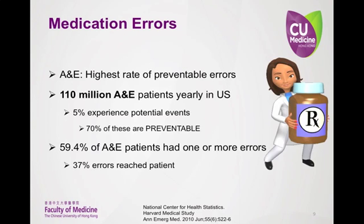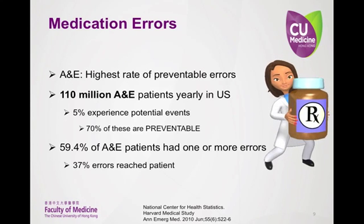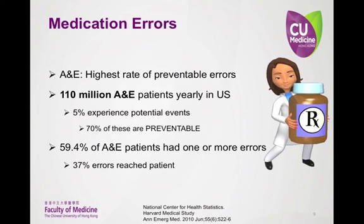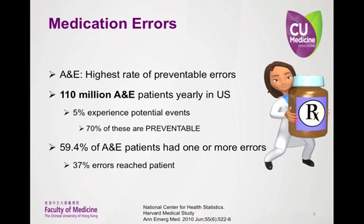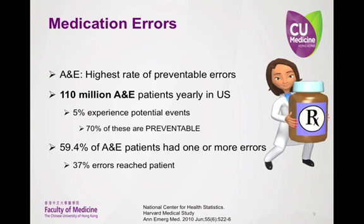Medication errors are a huge problem in all areas of the hospital, but to a greater extent in the A&E department. The A&E department has the highest rate of preventable errors compared to any other ward in the hospital, with almost 60% of patients experiencing potential medication errors. Studies have shown that over 50% of the errors occur in the prescribing phase, and the next highest area was the administering phase, accounting for 35% of errors — both areas where the A&E pharmacist can help.